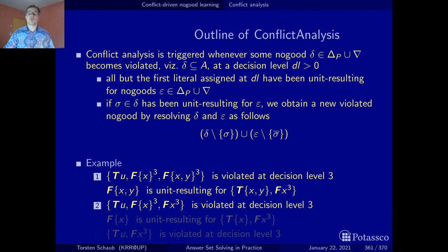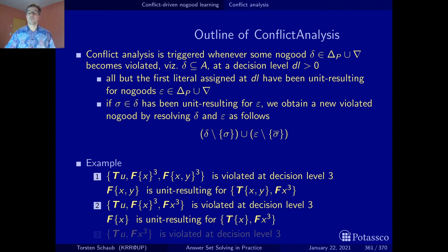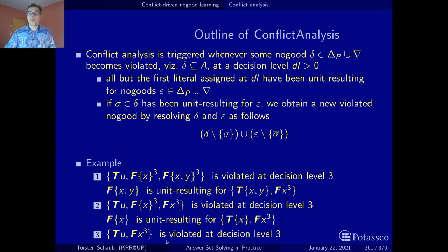Our strategy is again to take the last literal added to the assignment — that's this one. We look at which no-good was responsible for its unit propagation. This literal was obtained from this no-good here. This is the conflict no-good; that's the reason no-good that led to the unit propagation of f of the body with x. It contains the literal we want to eliminate, and here is the complement. So we erase the literal from the conflict no-good, erase its complement from the reason no-good, and union the remaining elements. We get a new conflict no-good, which is violated at decision level 3.